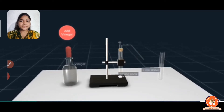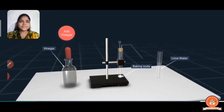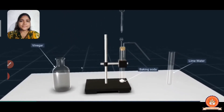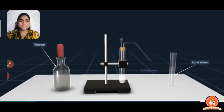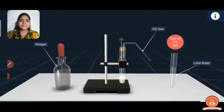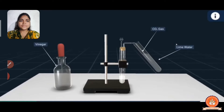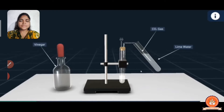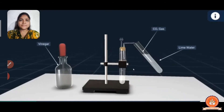Here we have taken some baking soda in a test tube. Add a few drops of vinegar into the test tube with the help of a dropper. The evolved carbon dioxide gas is passed into a test tube containing lime water. Observe the color change — we can see that the lime water turns milky. It forms calcium carbonate and water. The reaction between carbon dioxide and calcium hydroxide results in the formation of calcium carbonate and water.